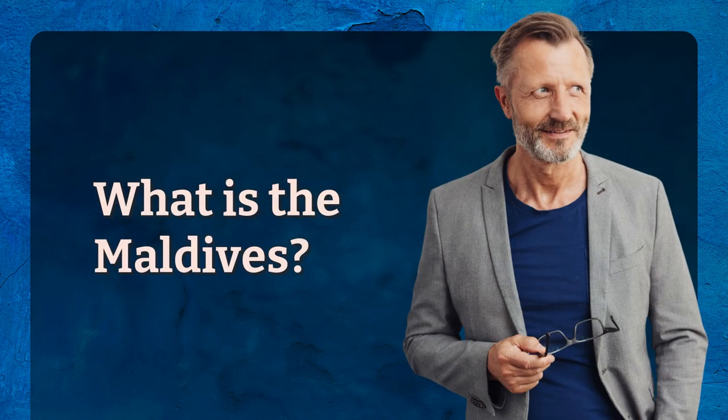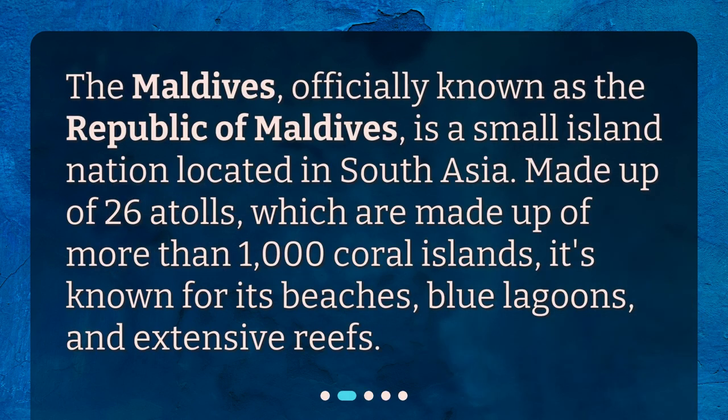What is the Maldives? The Maldives, officially known as the Republic of Maldives, is a small island nation located in South Asia. Made up of 26 atolls, which are made up of more than 1,000 coral islands, it's known for its beaches, blue lagoons, and extensive reefs.